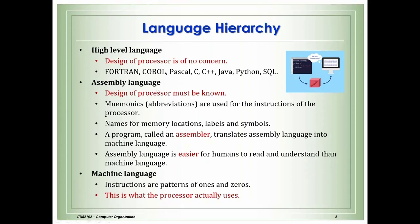We use an assembler to translate from assembly language to machine language. Assembly language uses English abbreviations the user can understand — like 'add,' 'move,' 'divide' — and the assembler translates this into machine language that the computer understands, which is basically zeros and ones. The processor uses machine language; assembly language is for humans to understand.